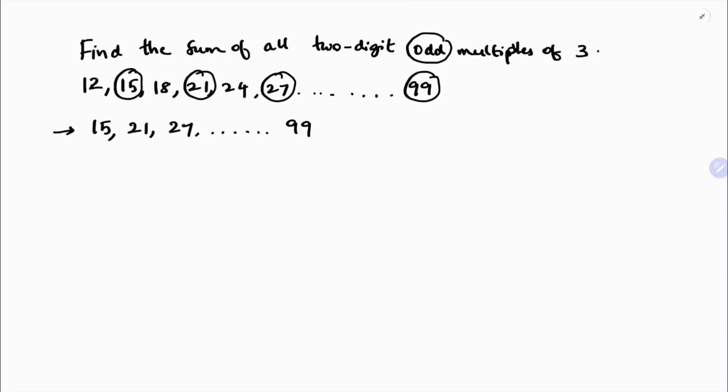The first term is clearly 15, and the common difference is a₂ minus a₁, that is 21 minus 15, which is 6. So the common difference is 6.